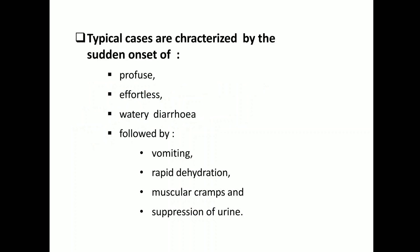Coming to the symptoms: in typical severe cases, you can observe the following signs and symptoms. There will be sudden onset of profuse, effortless watery diarrhea, followed by vomiting, rapid dehydration, muscle cramps, and suppression of urine. Whenever you find a case with acute diarrheal distress exhibiting these signs and symptoms, you can classify it as having severity of the disease caused by cholera.